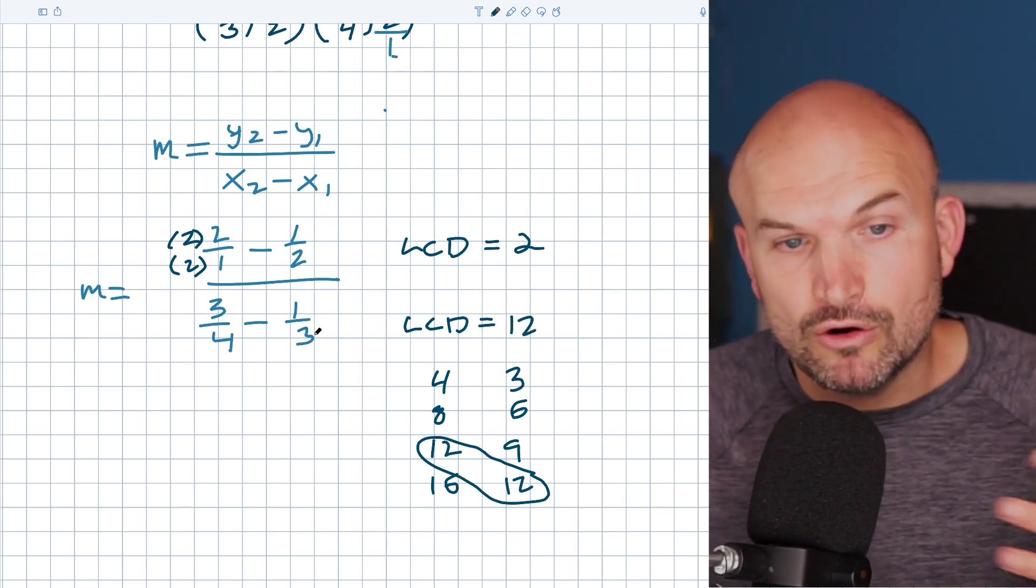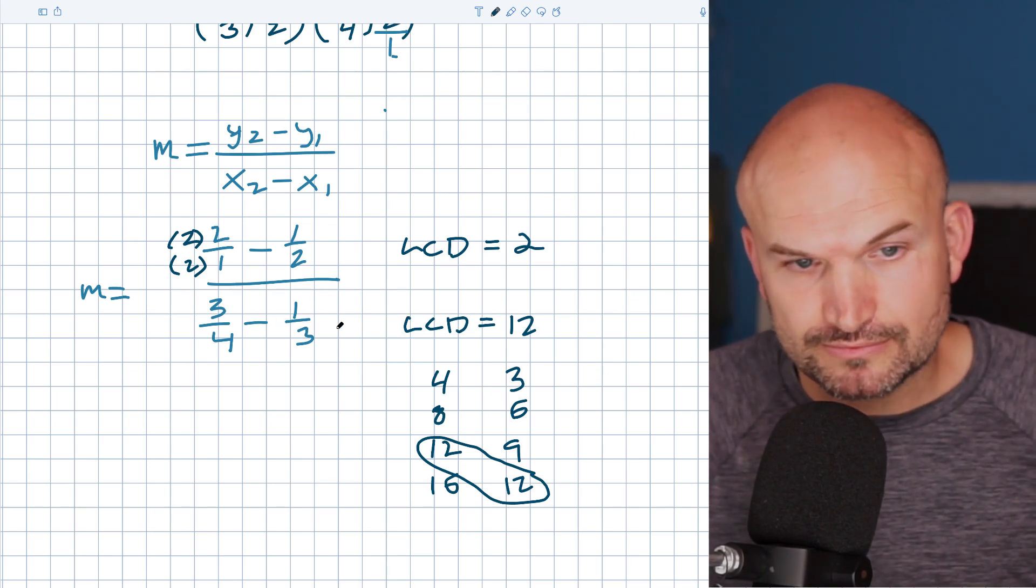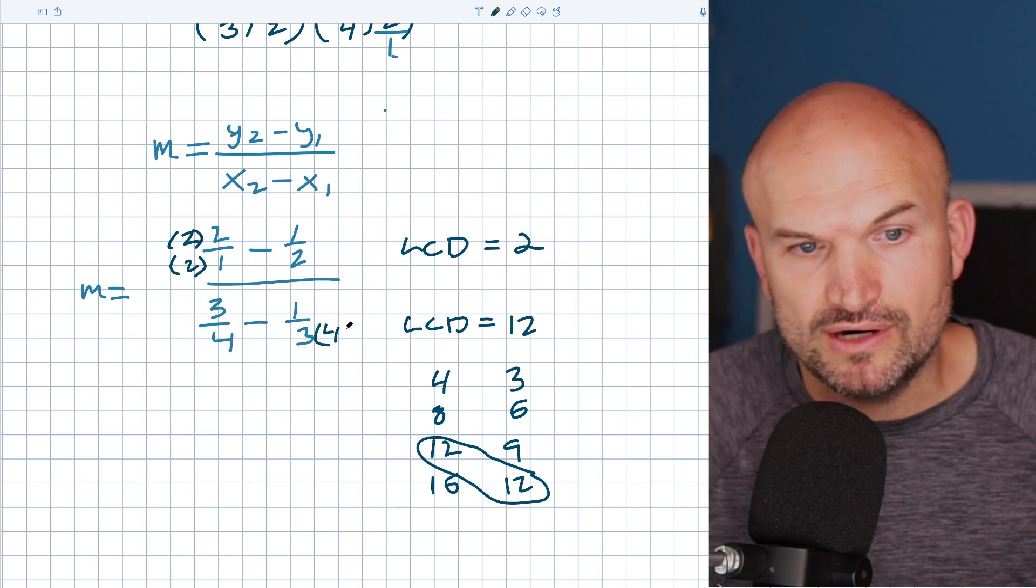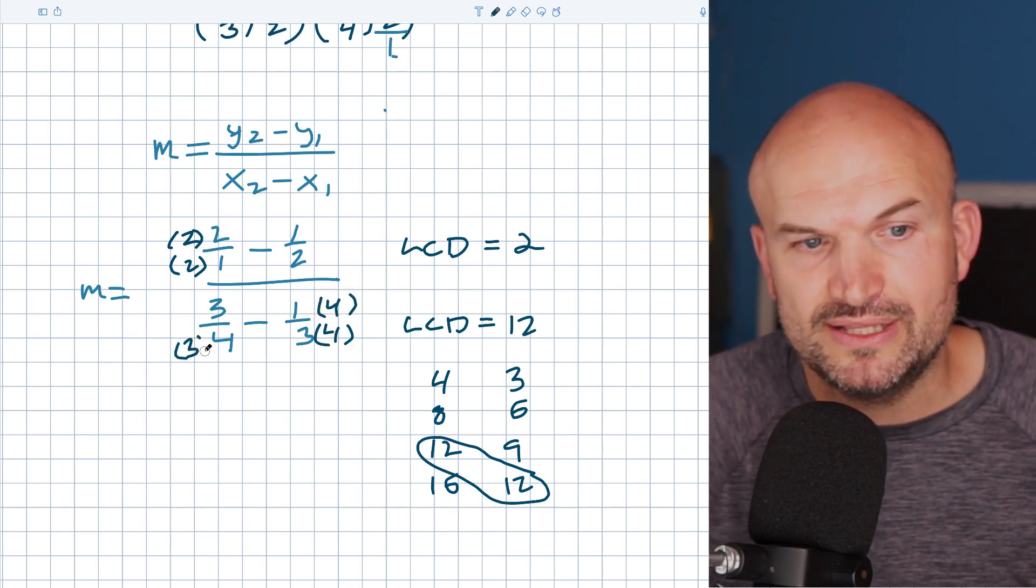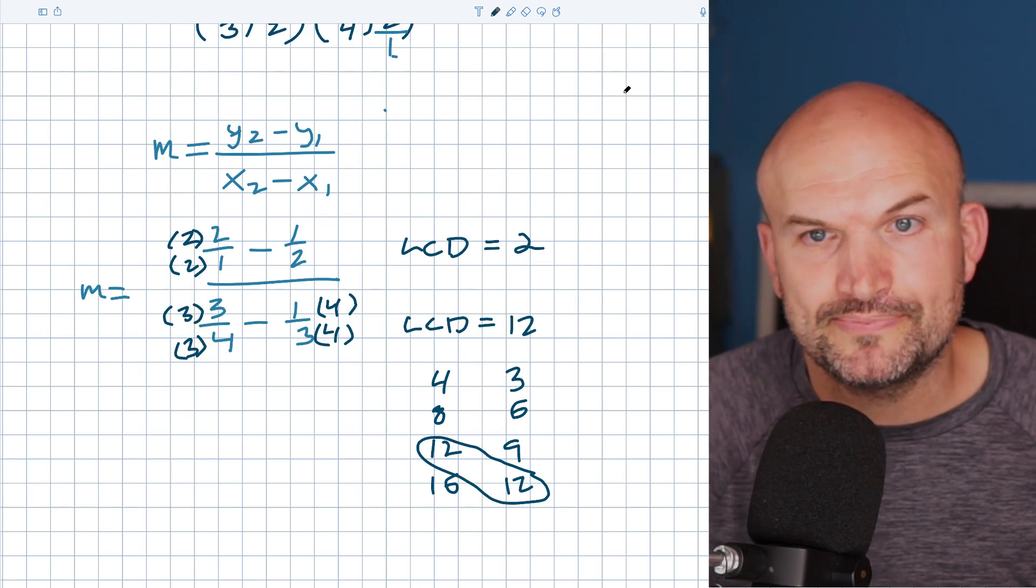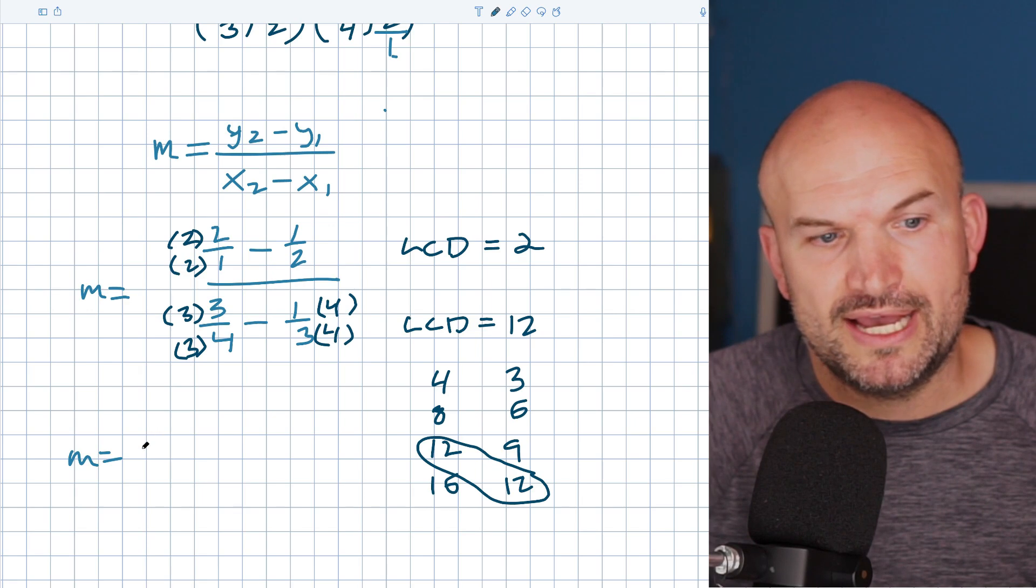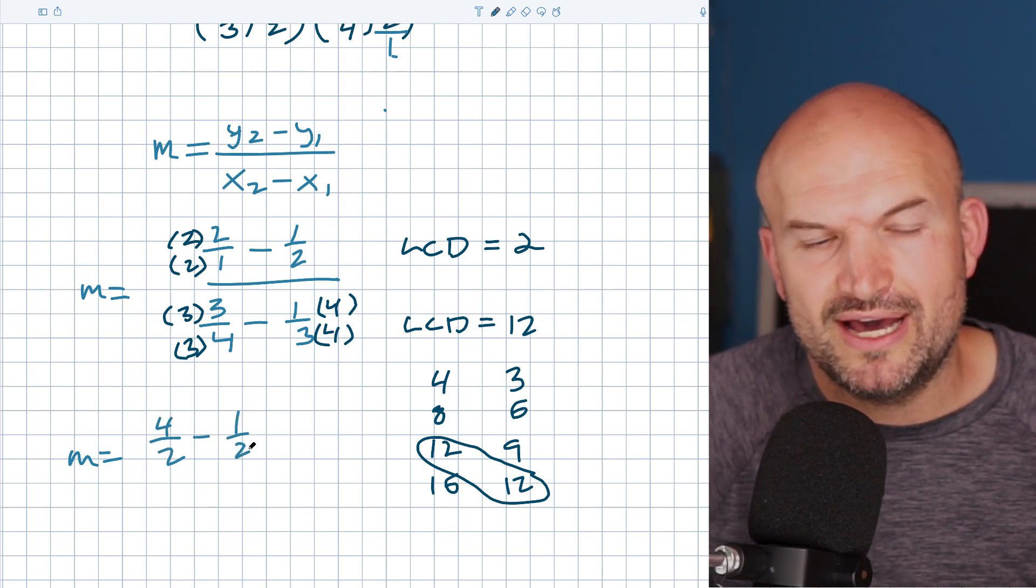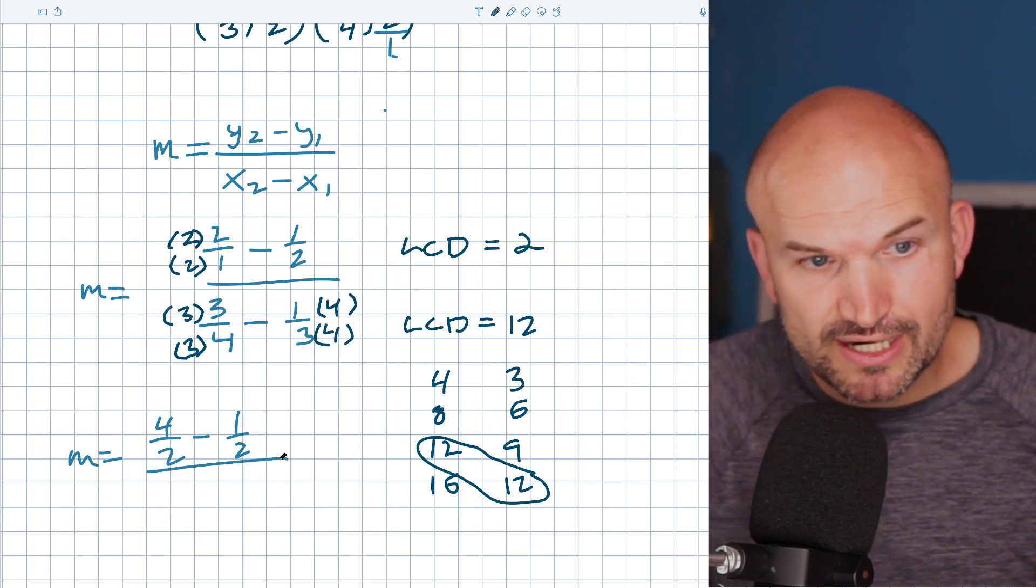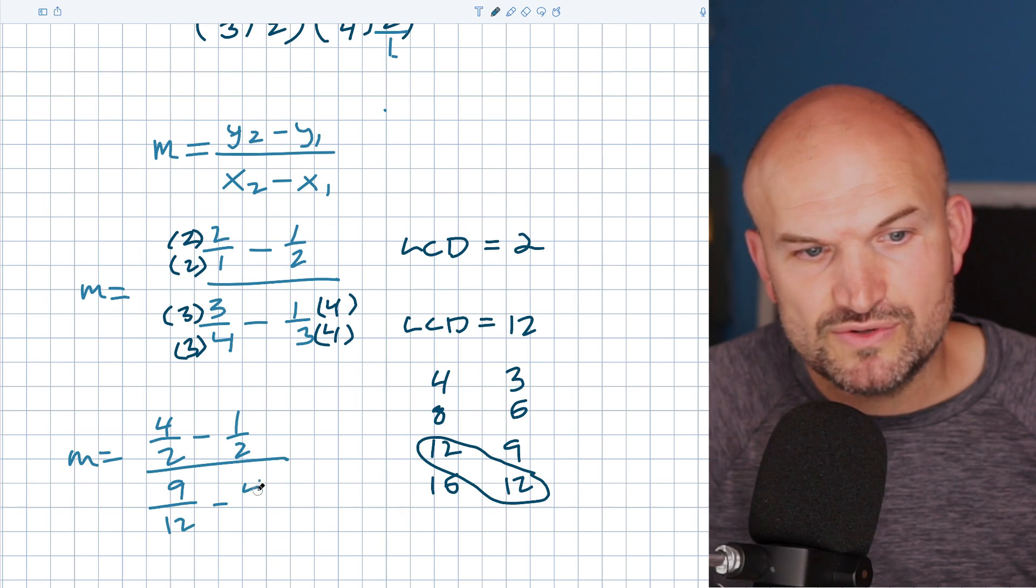So what I need to do is create or obtain a 12 with a 1/3. So to do that, I'm going to multiply by 4 in the denominator. So therefore I have to multiply 4 in the numerator. Over here, I'm going to multiply by 3 in the denominator and then a 3 in the numerator. So now what I get m is equal to, let's see, this is going to be a 4/2 minus a 1/2. And then over here, I'm going to get a 9/12 minus a 4/12.